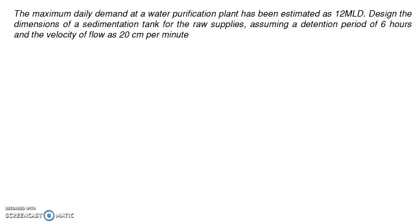According to the problem statement, what we have here: the daily demand is 12 million liters, i.e., 12 × 10⁶ liters daily — that means for a 24-hour time span. The retention period given is 6 hours, meaning for every 6 hours you supply another batch of water. The velocity of flow is 20 centimeters per minute, which can be converted to 0.2 meters per minute.